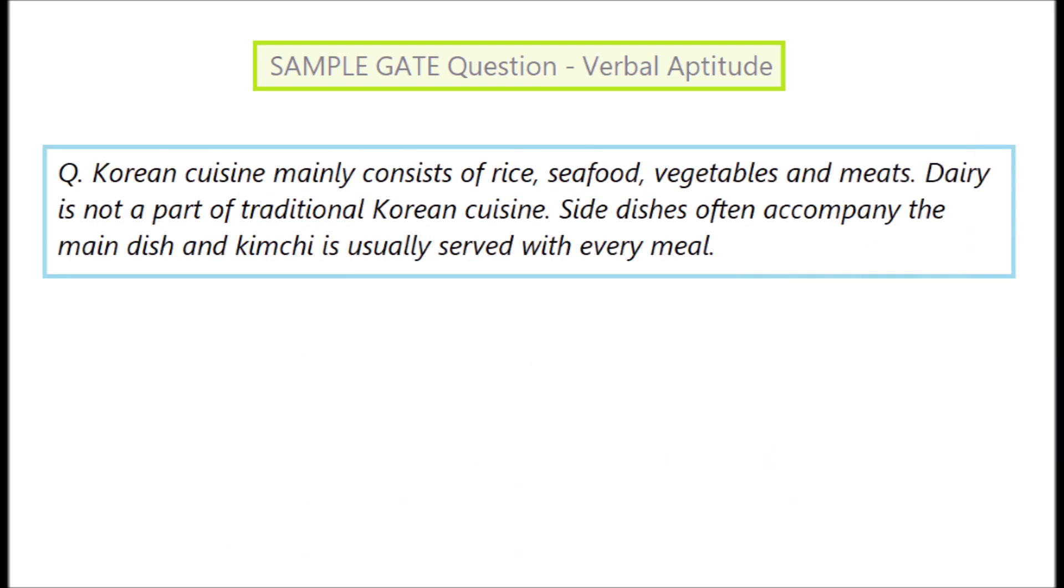Question 2. Korean cuisine mainly consists of rice, seafood, vegetables and meats. Dairy is not a part of traditional Korean cuisine. Side dishes often accompany the main dish and kimchi is usually served with every meal.